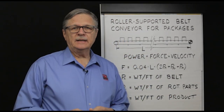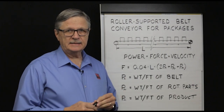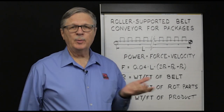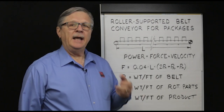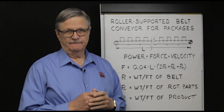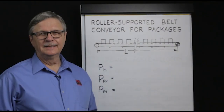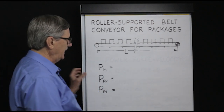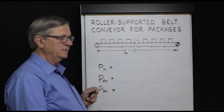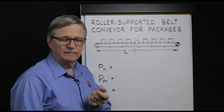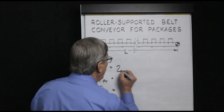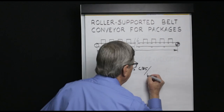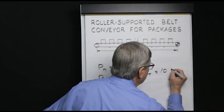Now let's see how to use the equation by selecting a set of parameters. We'll assume a 100-foot-long conveyor belt that at any point in time holds 25 packages with an average weight of 50 pounds, and the belt speed is 100 feet per minute. PN, the weight per foot of the belt, is 5 pounds per foot. The equation calls for two times that value, so two times 5 equals 10 pounds per foot.